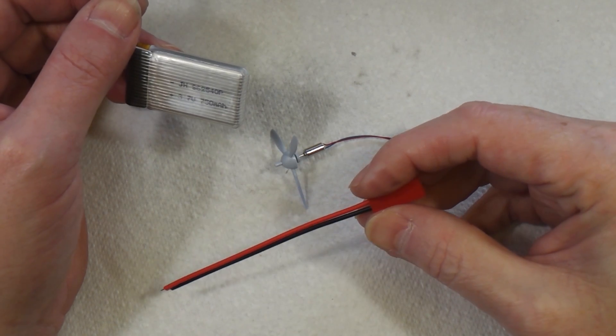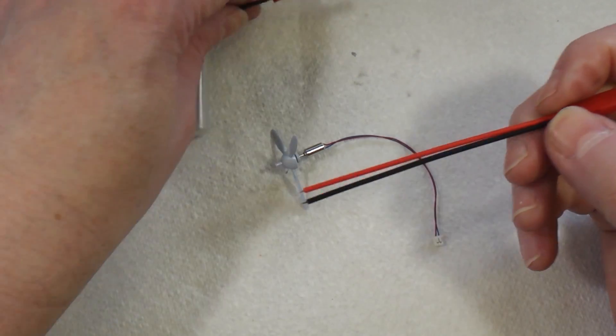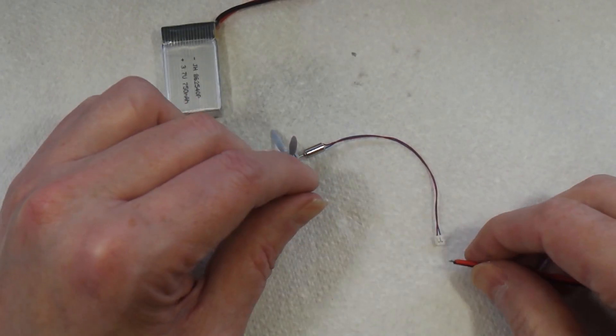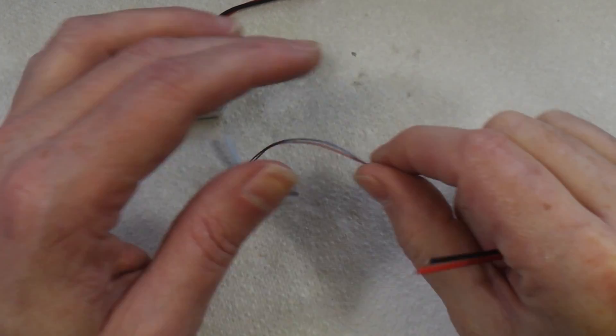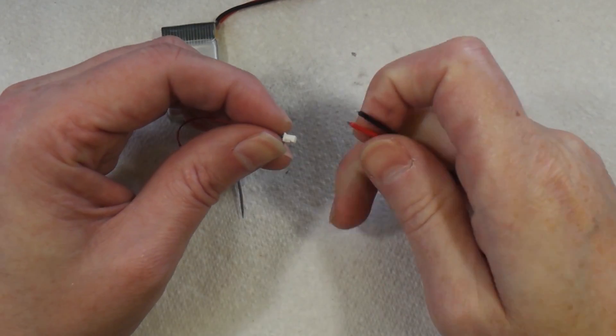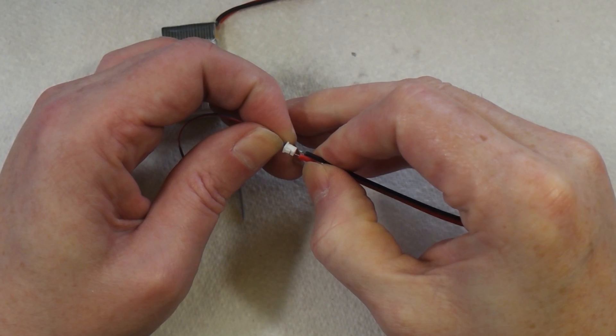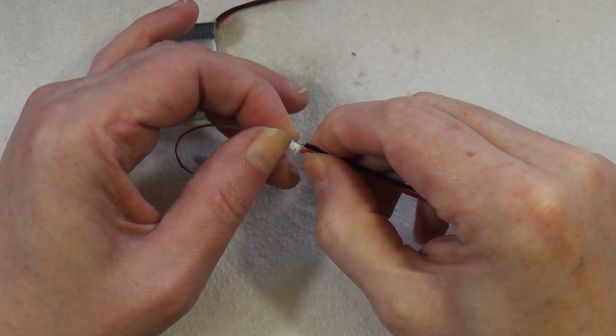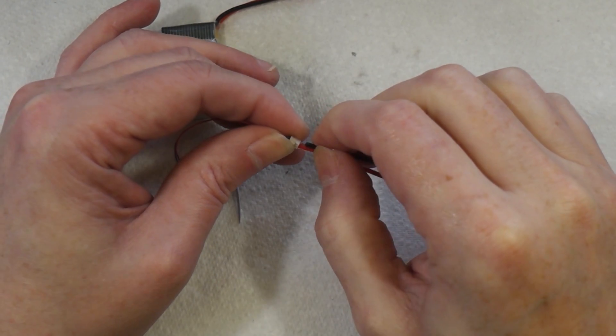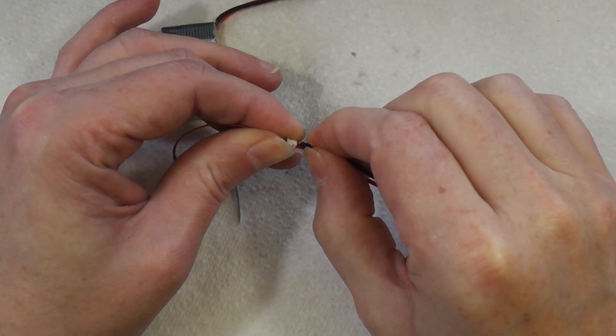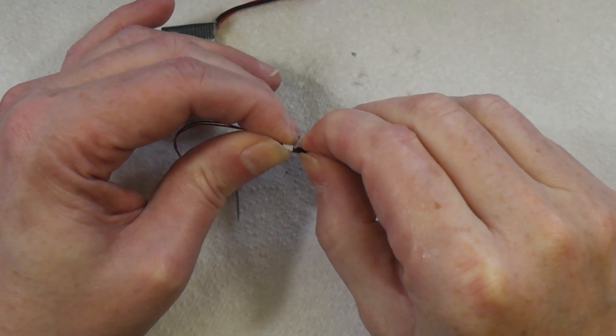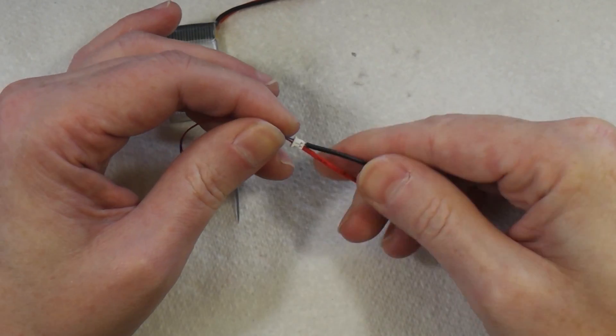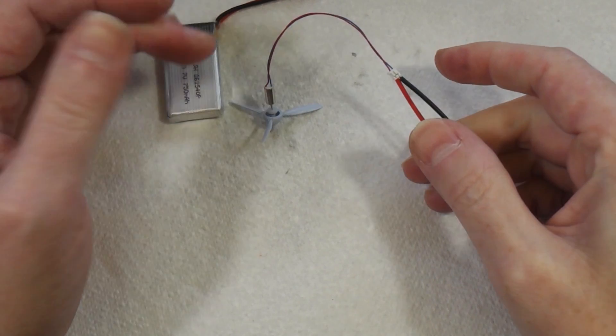So I'm going to use this adapter, and basically what will happen is I'll just poke the wires into the Molex connector and then connect it to the battery. And so now when I plug this into the battery, the motor should spin.